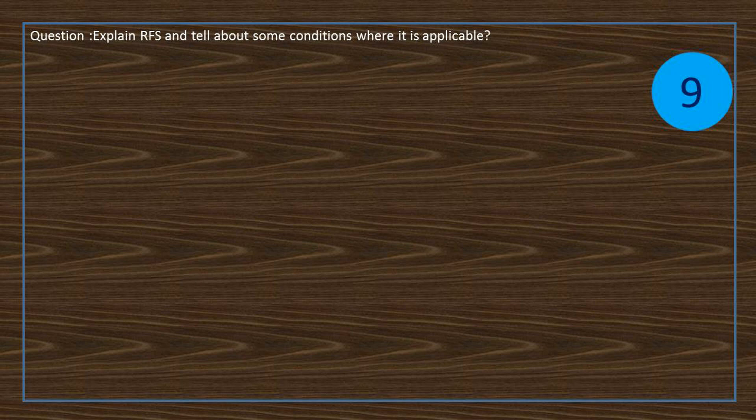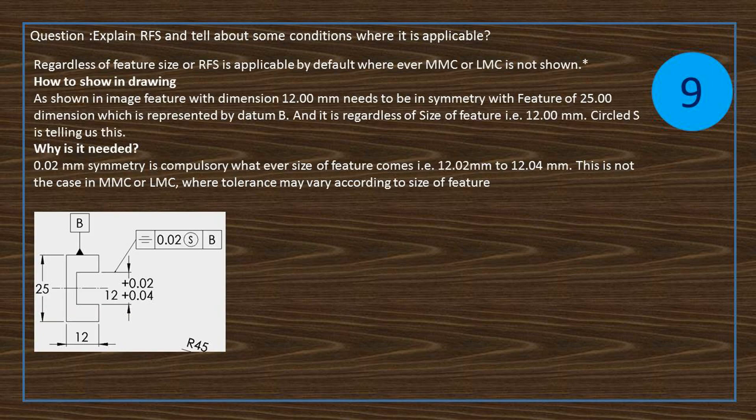Question: Explain RFS and tell about some conditions where it is applicable. Regardless of feature size or RFS is applicable by default wherever MMC or LMC is not shown. As shown in image, feature with dimension 12 mm needs to be in symmetry with feature of 25 mm dimension, which is represented by datum B, and it is regardless of size of feature that is 12 mm.